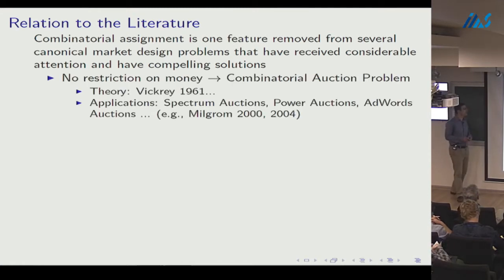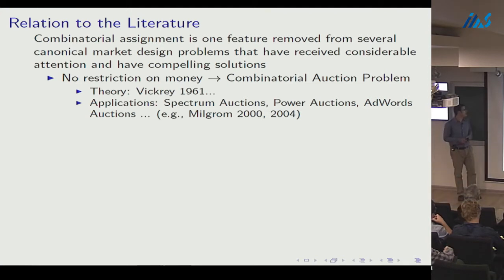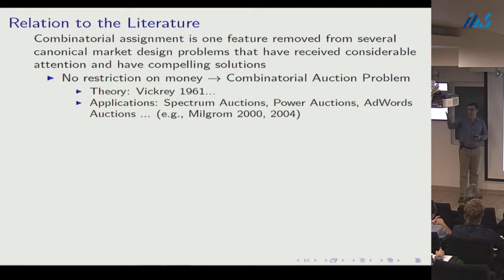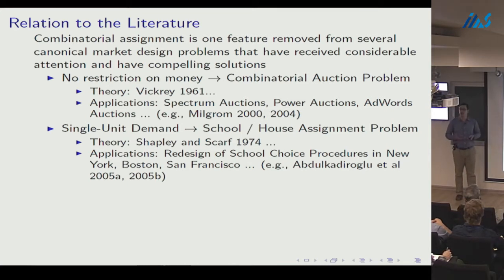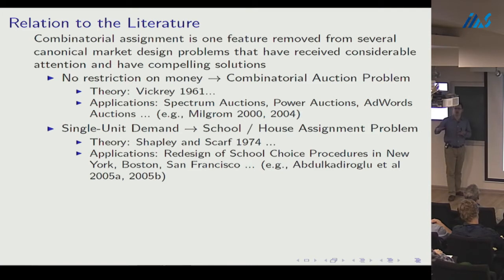If there weren't a restriction on money, we'd have a combinatorial auction problem — agents with preferences defined over bundles looking for a sensible allocation. The theory for combinatorial auctions traces to Vickrey and has numerous success stories in practice. If we had single-unit demand instead of preferences over packages, we'd have the Shapley-Scarf house allocation problem, a single-unit assignment problem.